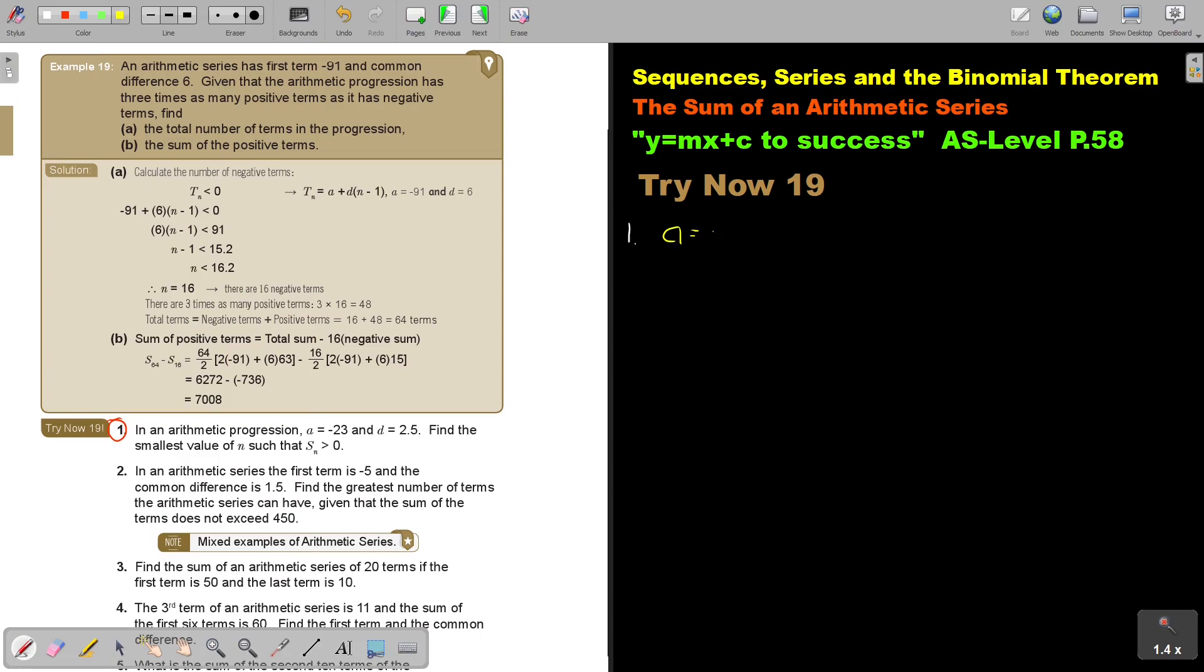A is negative 23. D is 2.5. Find the smallest. And don't forget that SN equals N over 2, 2A plus bracket N minus 1, D. I start with the statement.